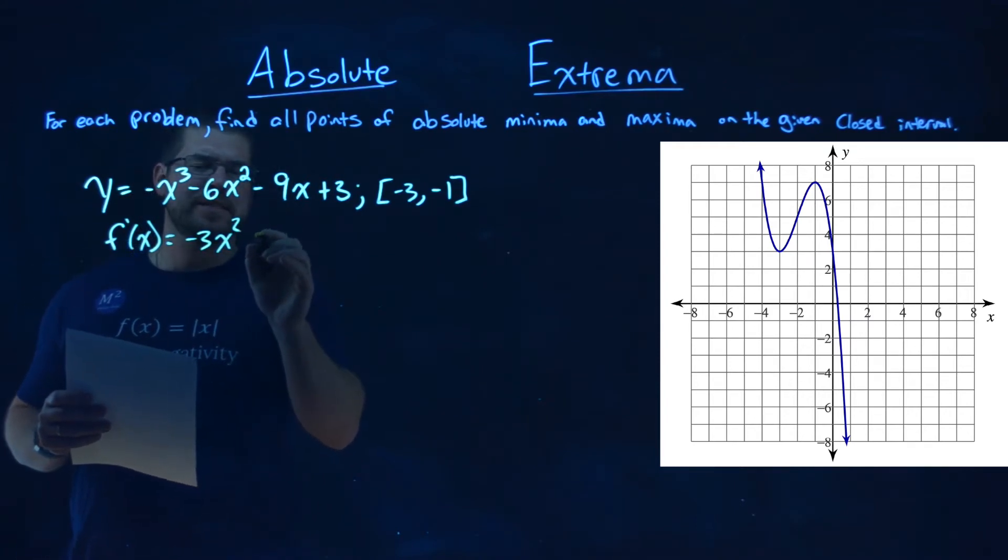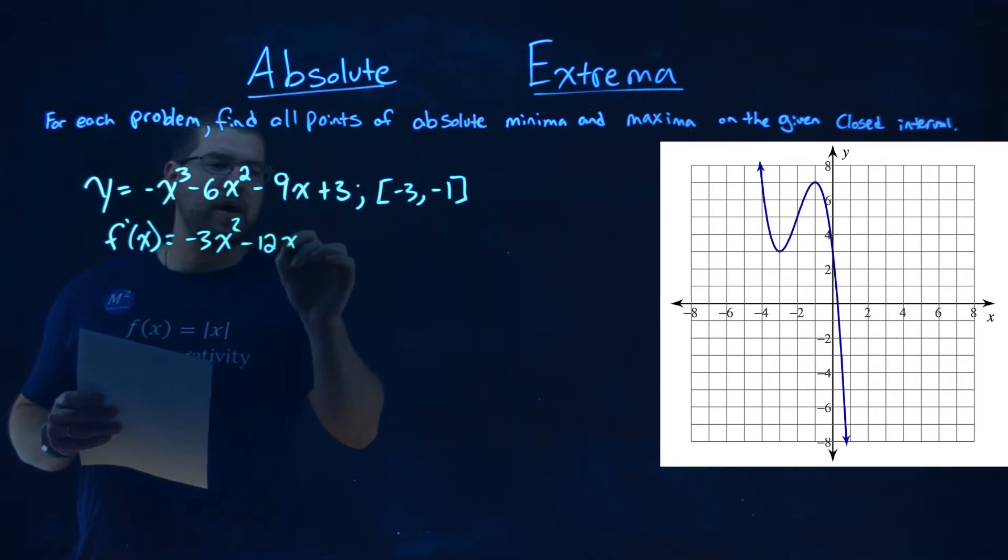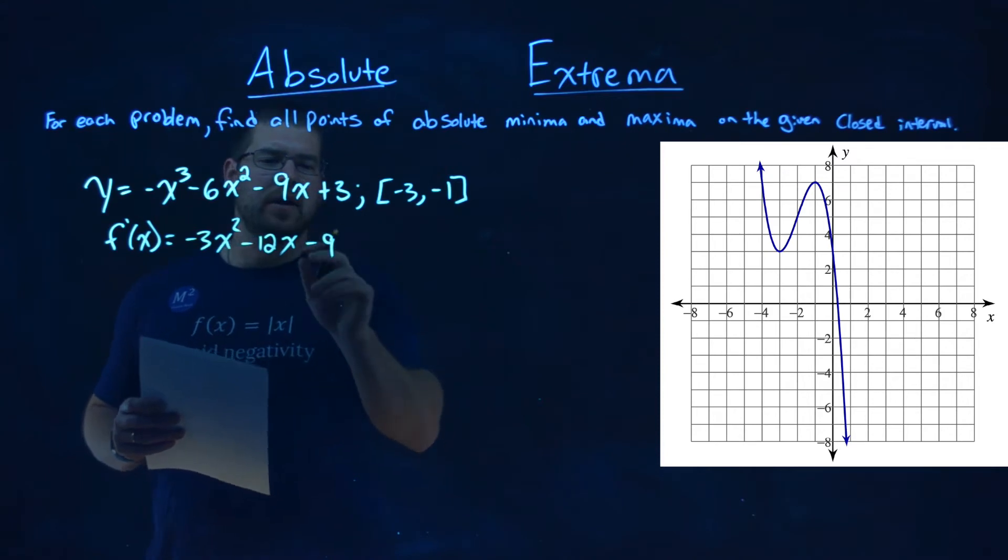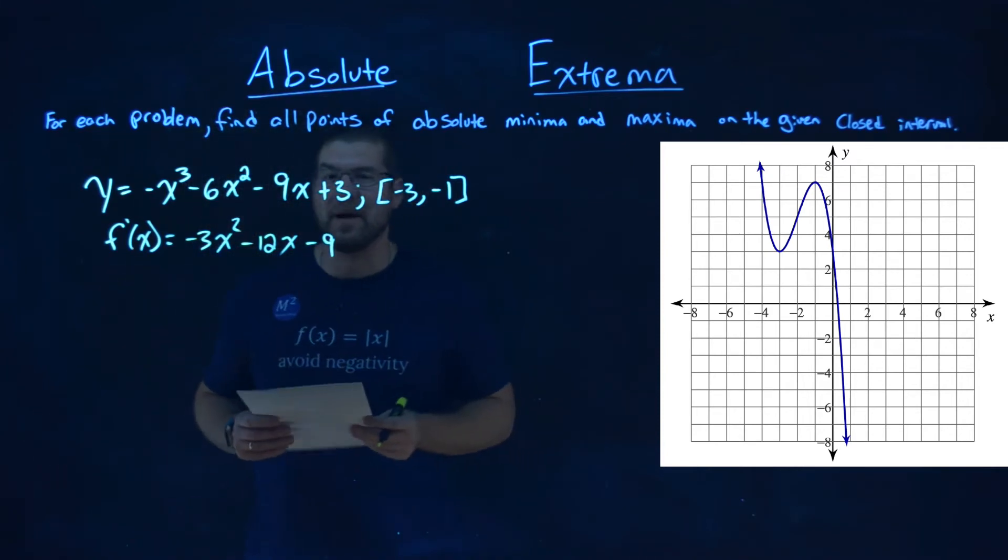and then 2 times 6 is 12, so we have negative 12x, subtract the exponent by 1, which is 1, and then we have minus 9. Hopefully, you know your derivatives by now.